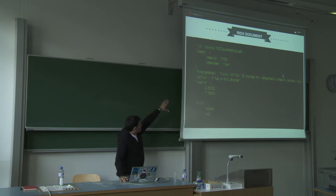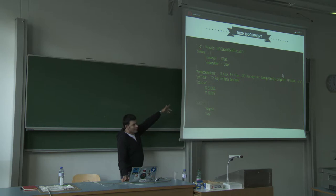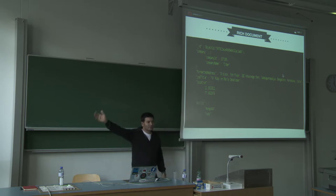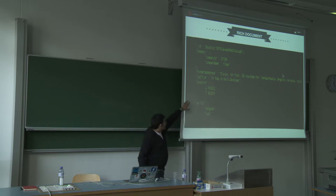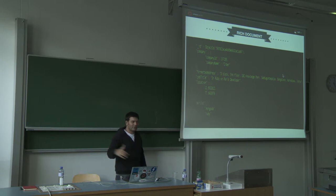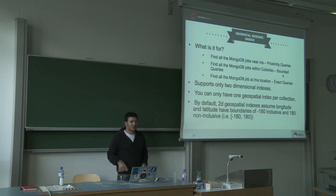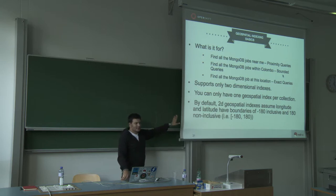Here is an example of a rich job document: it has job details, a nested company object with company ID and name, a string array for skills, and a double array for location. In MySQL you would need separate tables for skills (an element collection), location, and company. In MongoDB, all of this lives in a single document within one collection — no joins needed because everything is stored together.